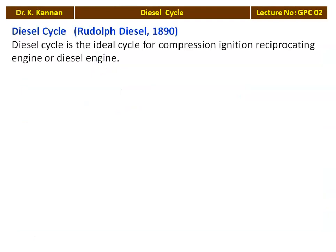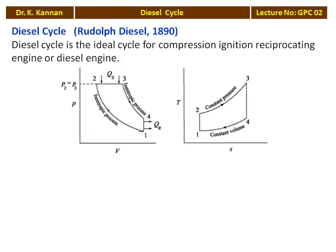The Diesel Cycle was developed by Rudolf Diesel in the year 1890, after the invention of the petrol engine. The Diesel Cycle is the ideal cycle for compression ignition reciprocating engines, or Diesel engines. All Diesel engines work on the Diesel Cycle, whether two-stroke or four-stroke. Looking at the PV and TS diagram — the pressure-volume and temperature-entropy diagram of the Diesel Cycle.